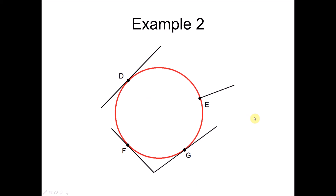How about Example 2? We have a straight line which touches the circle at only one point, D. So yes, this is a tangent and point D is a point of tangency. How about point E? If we extend the straight line, it will touch the circle at another point, so there will be two points — hence this straight line is not a tangent, and E is not a point of tangency. This straight line touches the circle at one point, and this straight line also touches the circle at one point. As long as the straight line touches the circle at only one point, it is a tangent. Points F and G are points of tangency for their corresponding tangents.